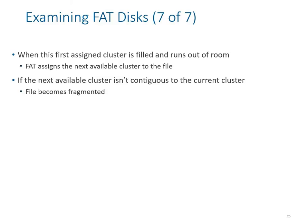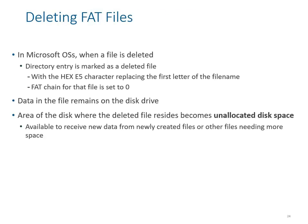When deleting FAT files in a Microsoft operating system, the directory entry is marked as deleted — only marked, but an impression remains. The hex character E5 replaces the first letter of the file name. If the first character in hexadecimal is E5, it means something was deleted. In forensics, this allows investigators to identify where data was written and then removed. The area of the disk where the deleted file resided becomes unallocated disk space, available for newly created files.